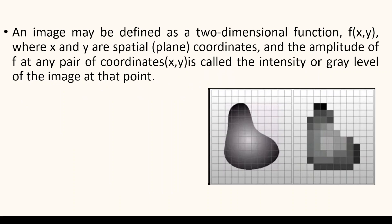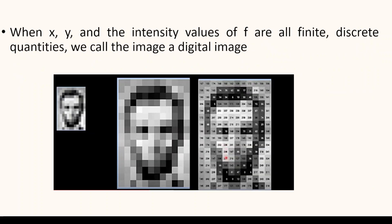Looking into the term image — what is an image? We can define an image as a two-dimensional function f, where x and y are spatial coordinates. The amplitude of f at any point or coordinate is called the intensity or the gray level of the image at that particular point. When x, y, and the intensity values of f are all finite discrete quantities, we call such an image a digital image.